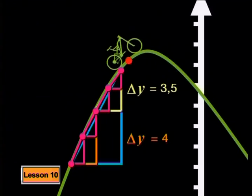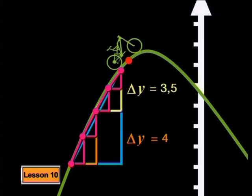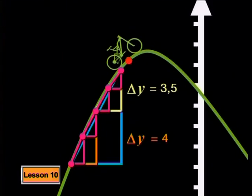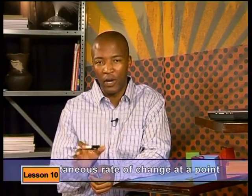If we made the interval smaller and smaller, then the average rate of change would more accurately represent the rate of change at the point in the interval. And if we kept on letting that horizontal change get closer and closer to zero, we'd end up with the tangent. So the gradient of the tangent gives us the rate of change at the point — and we call the gradient of the tangent the derivative, or more accurately, the instantaneous rate of change at a point.